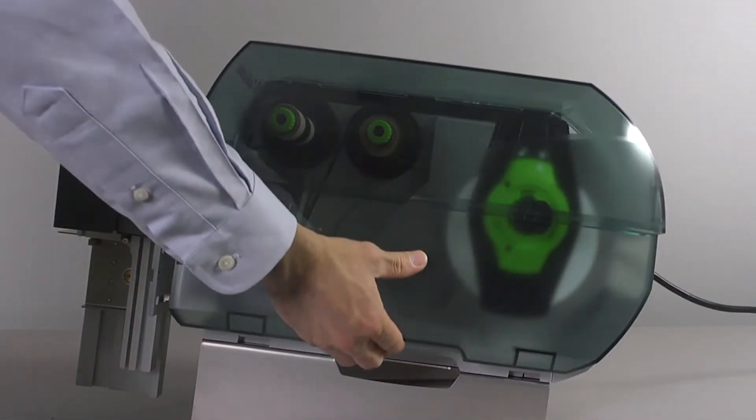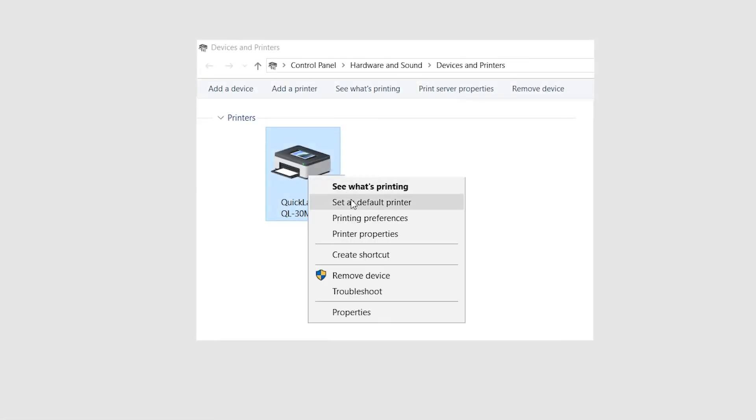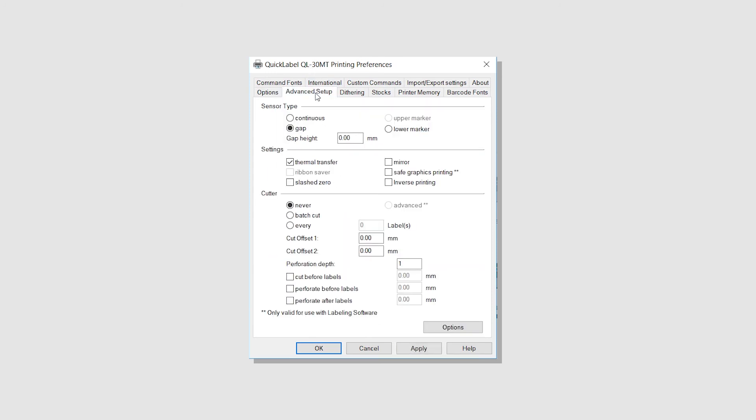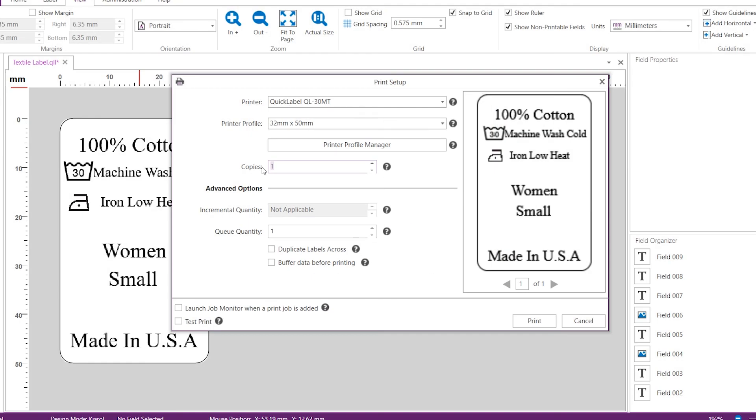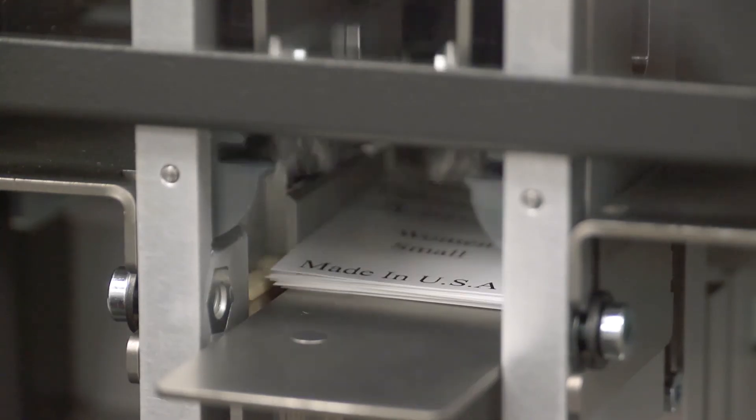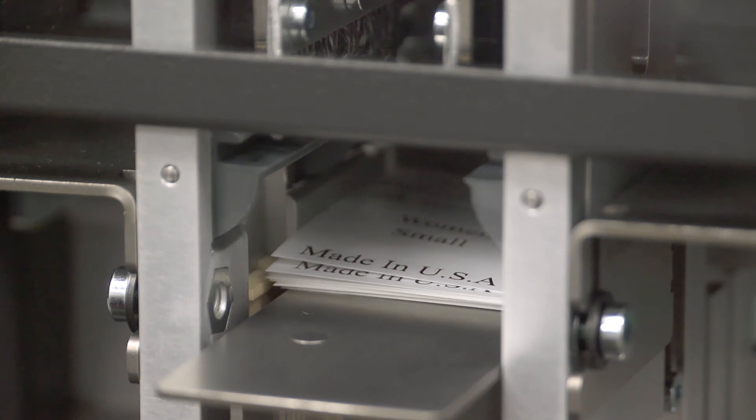Now you can close the cover. On your computer, enter the size of the material into the driver settings. Set the correct sensor type and enable the cutting option. The sensor type and cutter options are located in the advanced setup tab. Send a print job to the printer from the CQL Pro software. You've successfully loaded the media into your printer, installed the cutter, and are ready to start printing your tags.